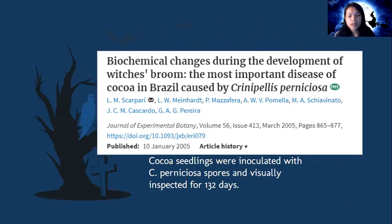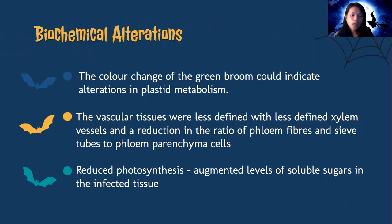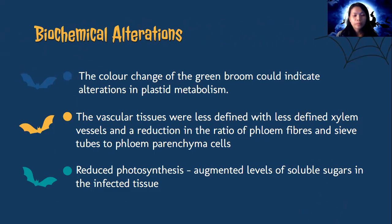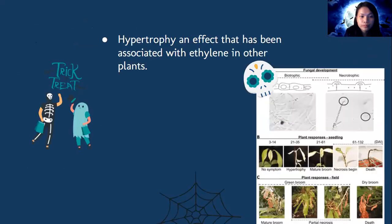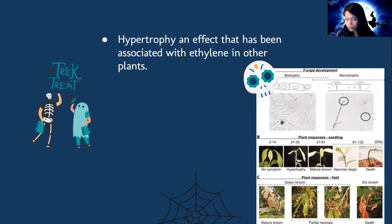In a study conducted in 2005, cocoa seedlings were inoculated with C. perniciosa spores and visually inspected for 132 days. The biochemical alterations observed: the color change of the green broom could indicate alterations of plastid metabolism. The vascular tissues were less defined with less defined phloem vessels and a reduction in the ratio of phloem fibers and sieve tubes to phloem parenchyma cells. Reduced photosynthesis was observed with augmented levels of soluble sugars in the infected tissue. Also, hypertrophy has been associated with ethylene in other plants. The figure shows classical symptoms of green and dry brooms in the field, going from mature broom to partial necrosis leading to death.